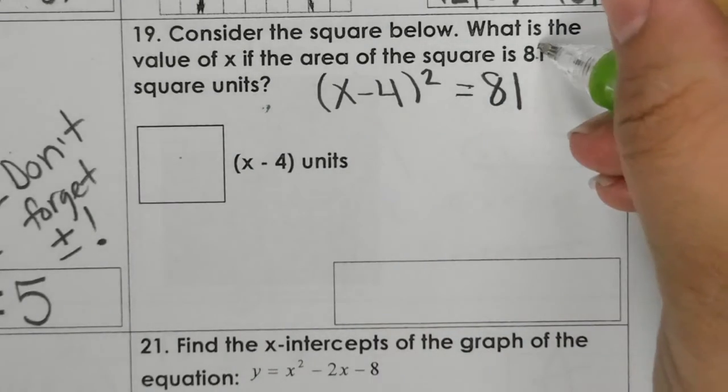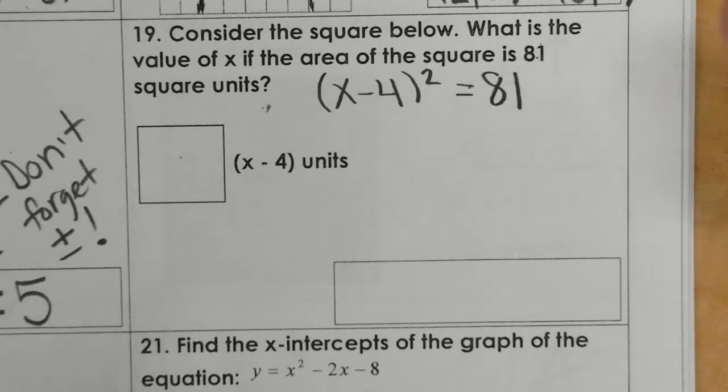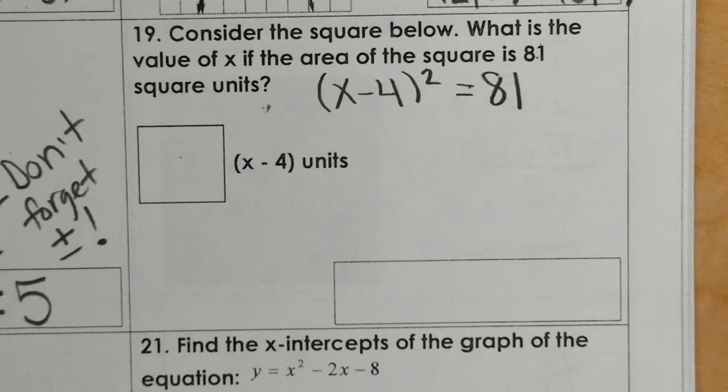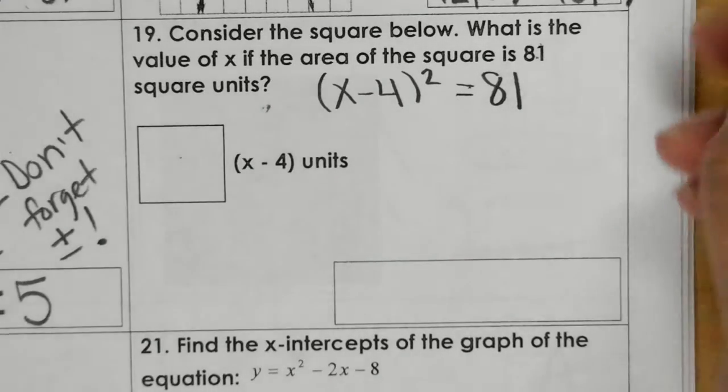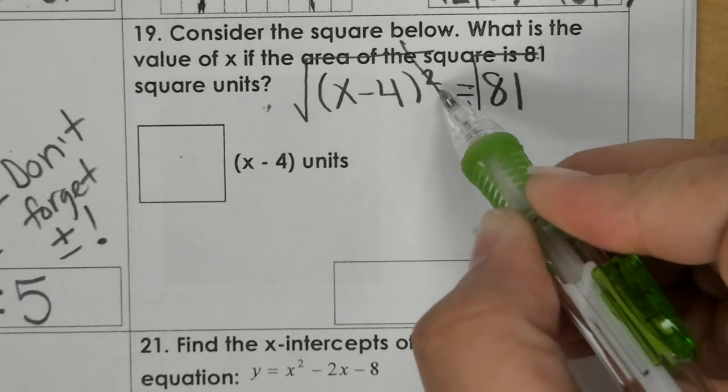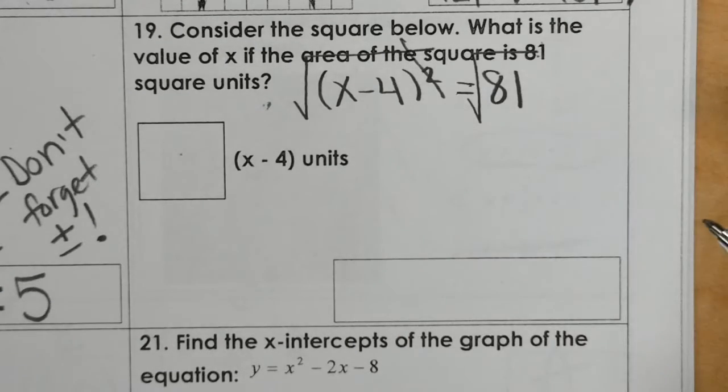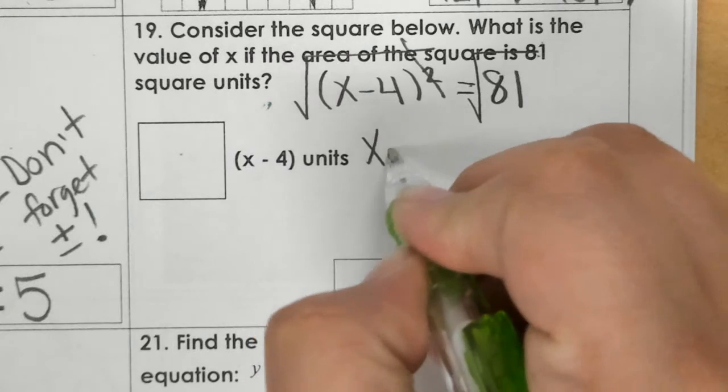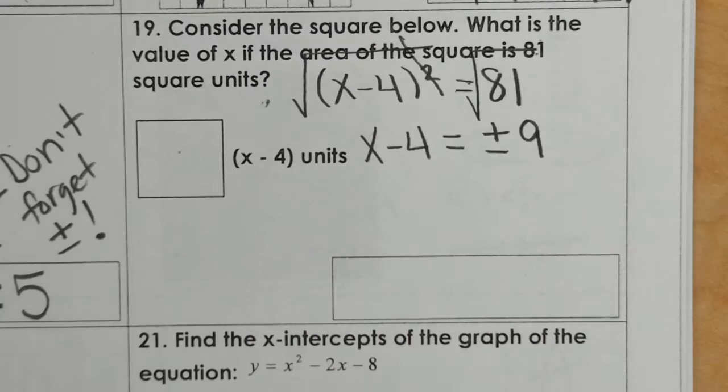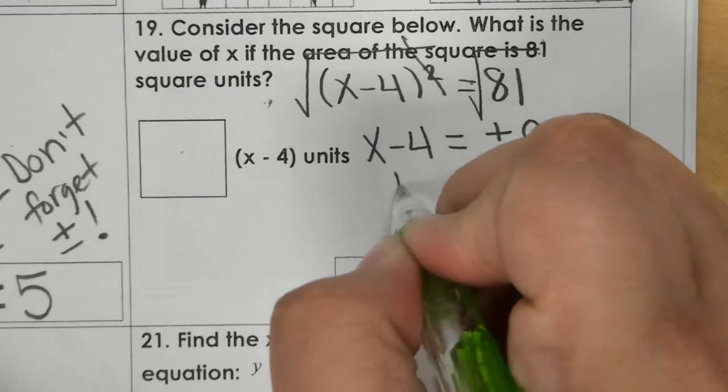Because 81 is the area, the whole idea is finding the missing x once you have the area. So I would square root both sides, canceling my 2 out. Now I get x minus 4 equals plus or minus 9. Then I add 4.